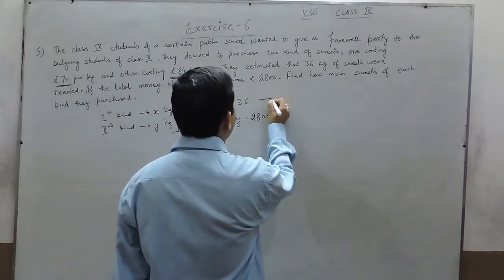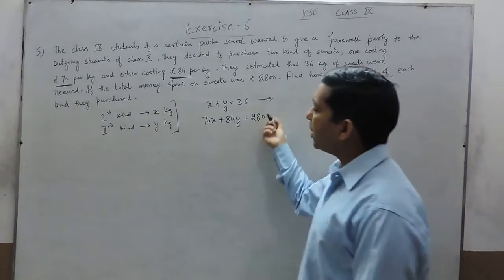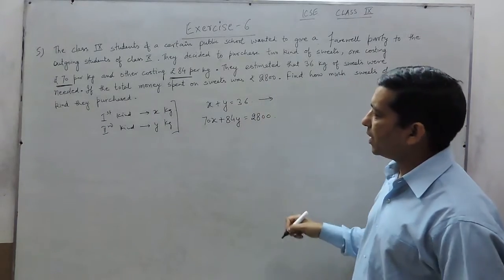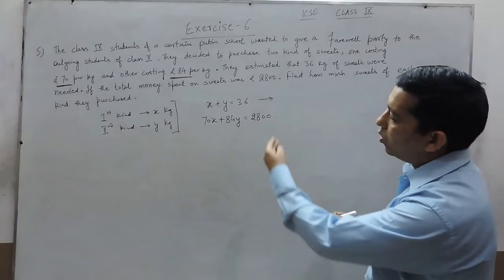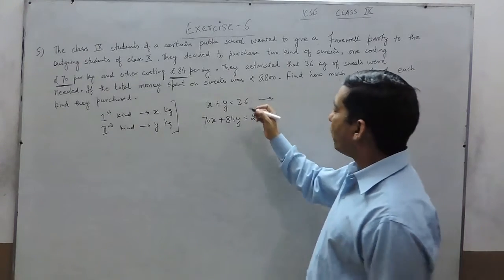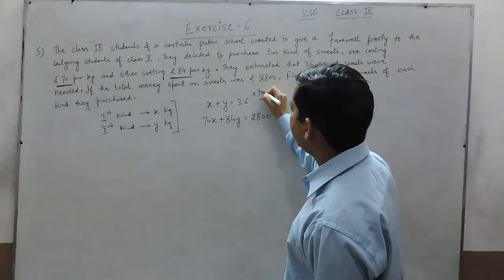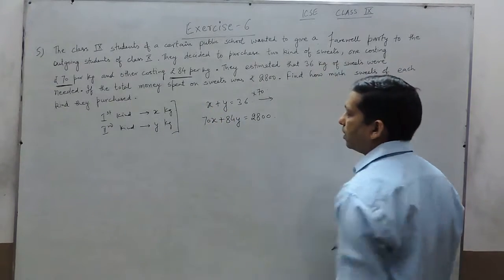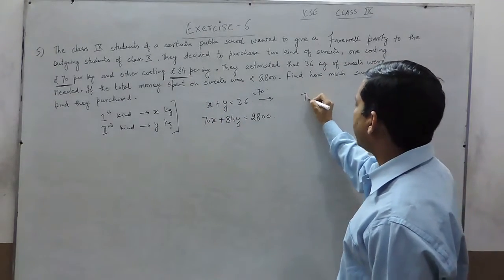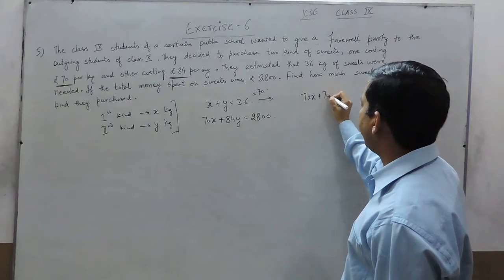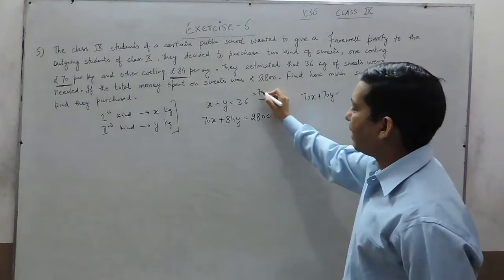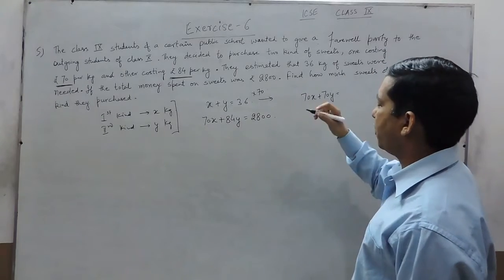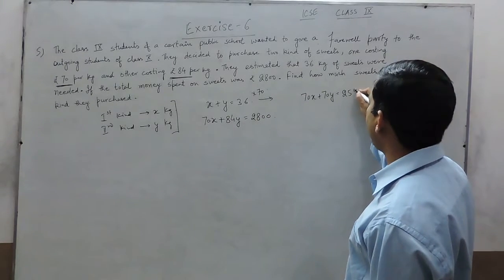Now, we know that we have to either put the value of x or y in the second equation or the best way is to eliminate one of the values. So, we multiply the first equation by 70 because x coefficient should be equal. The first equation becomes 70x plus 70y equals 70 into 36. If you multiply it comes out to be 2520.